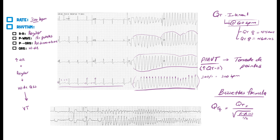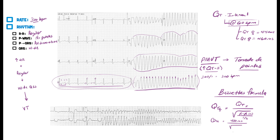Let's calculate the QT interval using this example. We'll go from the start of the Q-wave to the end of the T-wave — that's our QT interval. One box is 0.2 seconds, so two boxes is 0.4 seconds, which is about 400 milliseconds. So QTc equals 400 milliseconds divided by the square root of the R-to-R interval — but this has to be in seconds.